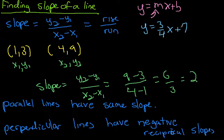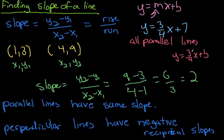Let's say we had y is equal to 3/4 x plus 7. If I wanted to find the slope of a line that's parallel to this, well, since I'm looking for something that's parallel, it would have the same slope. So all parallel lines will be of the general form y is equal to 3/4 x plus b, where the b is going to change.